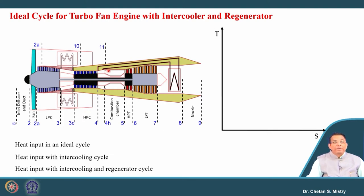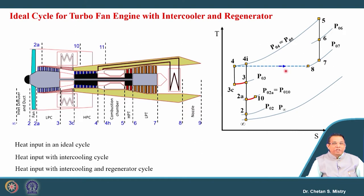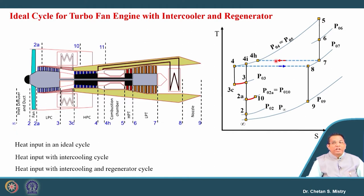In the combined intercooler and regenerator cycle: from 5 to 6 is HP turbine expansion work, 6 to 7 is LP turbine expansion work. The gas coming out from the LP turbine is passed to the regenerator, so the temperature at the entry of the nozzle is lower because some heat has been extracted. Process 7 to 8 represents what is happening inside the regenerator — an exchange of heat. Process 8 to 9 represents ideal expansion in the nozzle, and 10 to 11 represents expansion work in the fan nozzle.